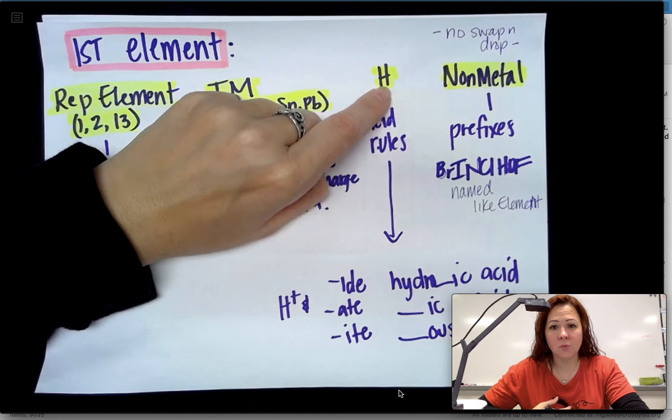Finally, if you have a nonmetal in your first spot, those are the ones that you use prefixes, and it's the only time you use prefixes. If you have a metal or a polyatomic ion, you're not going to use any prefixes at all. The prefixes tell how many are there. And then if you have Brinkelhoff, B-R-I-N-C-L-H-O-F, they're just named like the element themselves. Remember those are diatomic so you'd have a two in the formula.